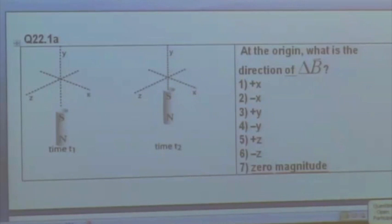So we just want to figure out what's the direction of the change in magnetic field. Reminder, the first thing you should do is draw the initial magnetic field. Think about what changes between the two. Then you should be able to figure out the direction of that delta B vector.